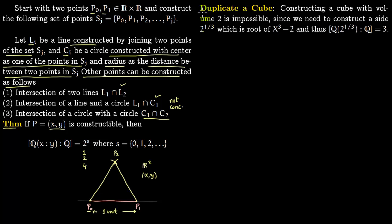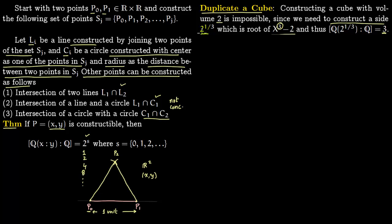The first ancient problem is duplication of a cube. The ancients wanted to construct a cube with volume 2. Starting from a unit segment, they needed to construct a side of length 2^(1/3), which is a root of x³ − 2. The degree [Q(2^(1/3)):Q] is 3, but powers of 2 take values 1, 2, 4, 8, and so on — there is no 3. So it is impossible to duplicate a cube.